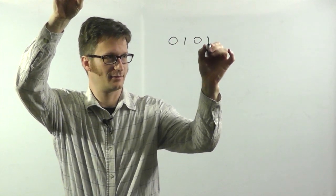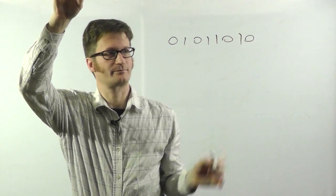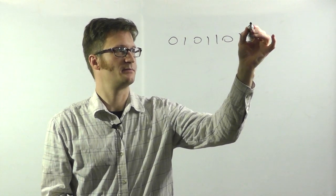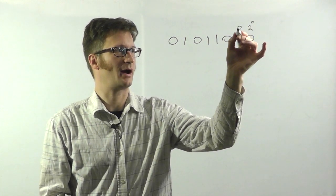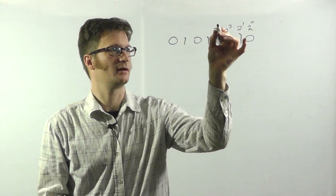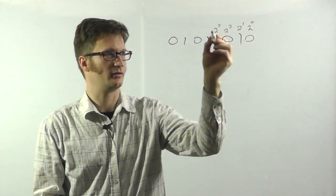Let's go over the most basic way that you can encode binary data, and that is straight binary. Each bit represents 2 to the power of something, so 2 to the 0, 1, 2 to the 2, 2 to the 3.